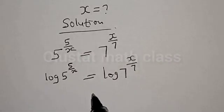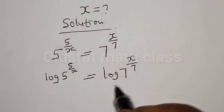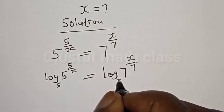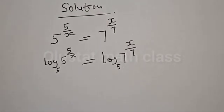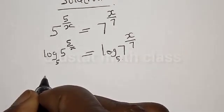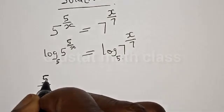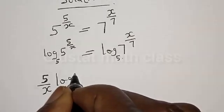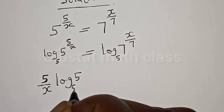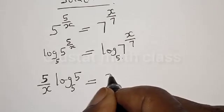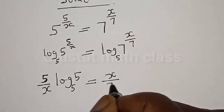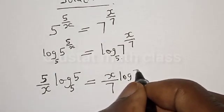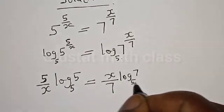Now in this case we can choose any base, but I will prefer base 5. Using base 5 on both sides, we have 5 divided by x times log 5 base 5 is equal to x divided by 7 times log 7 base 5.